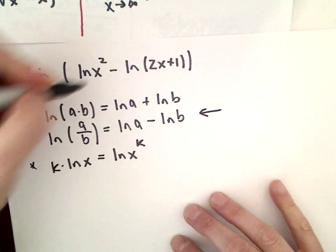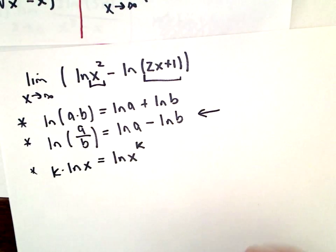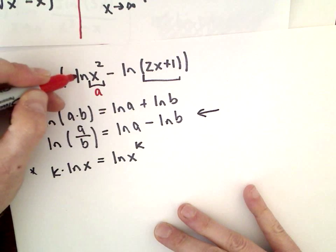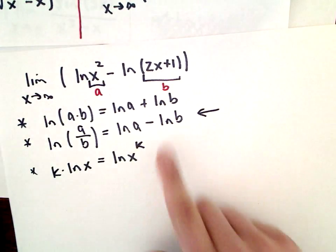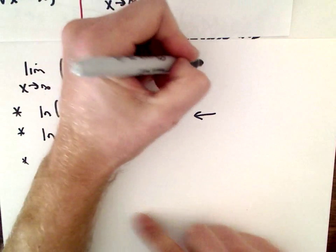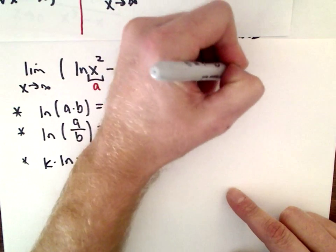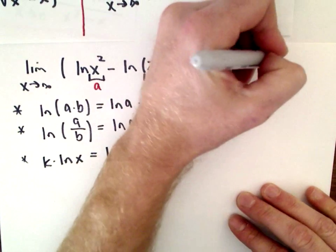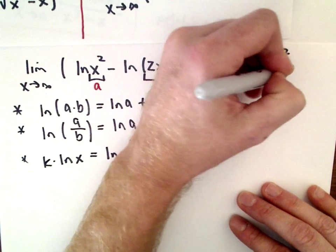Using my formulas, x² is playing the role of a and (2x+1) is playing the role of b. Reading right to left, the limit as x goes to infinity of ln(x²) minus ln(2x+1) is going to be the same thing as the limit as x goes to infinity of the natural logarithm of x squared over (2x+1), grouped into a single logarithm.